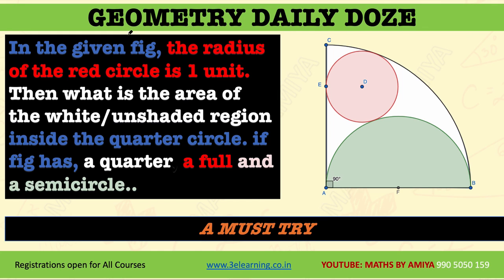There is a question in front of you under the geometry series. It is a must-try question. You have a quarter circle, a semicircle, and a full circle which is tangential. Given the radius of this red circle is one unit, what is the area of the white portion — that is, the area within the quarter circle apart from the full circle and the semicircle?